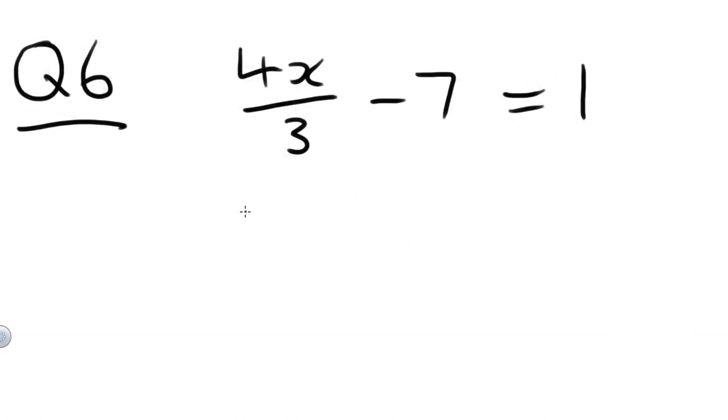Question 6. 4X over 3 minus 7 equals 1. We can't do anything with this first term, but we can do something with 7. The opposite of minus 7 is plus 7. Plus 7 to both sides. So we'll end up with 4X over 3 equals 8. 1 plus 7 equals 8, right?